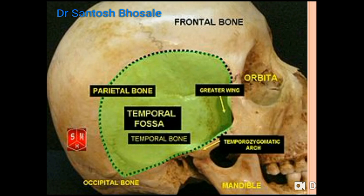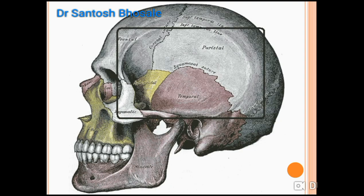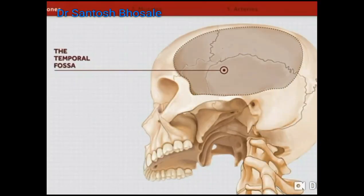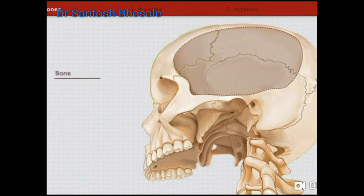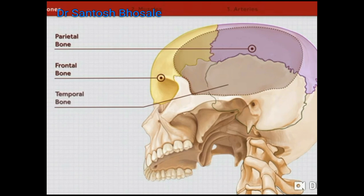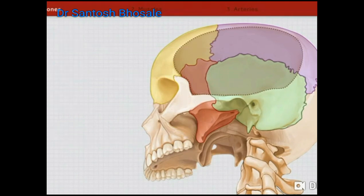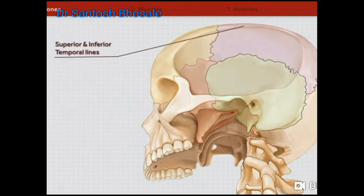It has roof, floor, anterior, posterior, superior, and inferior boundaries. The floor is formed by four bones meeting at the pterion — the location of the anterolateral fontanelle — comprising the frontal bone, parietal bone, squamous part of the temporal bone, and the greater wing of the sphenoid. The superior boundary is formed by the temporal lines, inferiorly filled by the zygomatic arch.